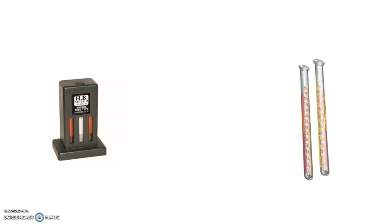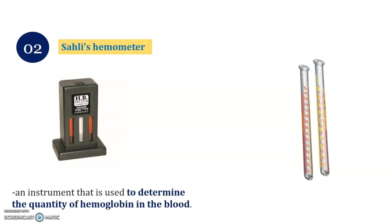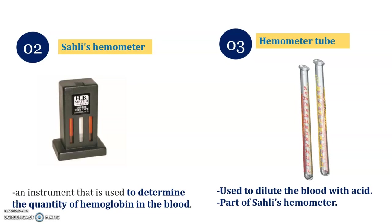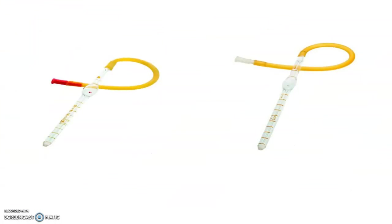Pause the video and identify the next two spots. Spot number two is Sahli's hemometer. With the help of this hemometer, we can identify or determine the quantity of hemoglobin in the blood. Using the hemometer tubes, we dilute the blood with acid — hydrochloric acid is used — which forms the acid hematin and a reddish-brown color is observed after addition of water. This is part of Sahli's hemometer. Next are the two pipettes.